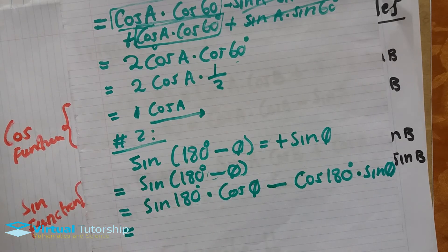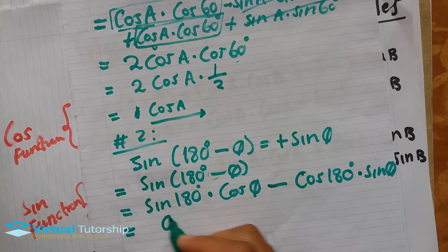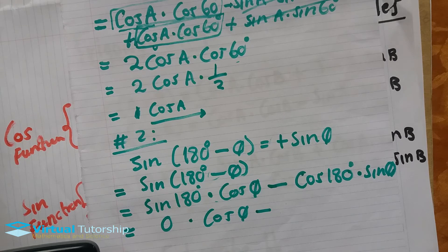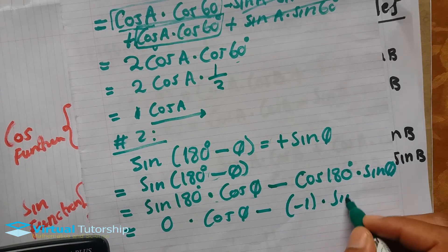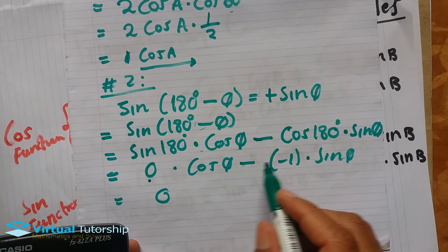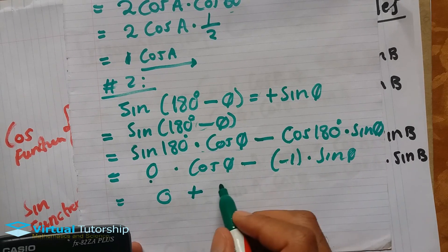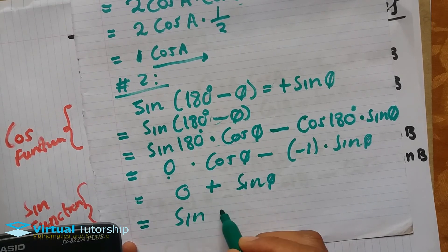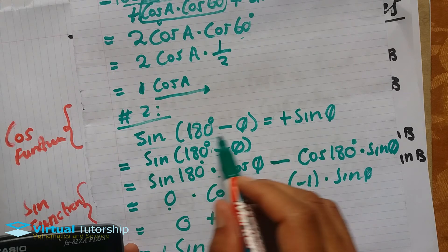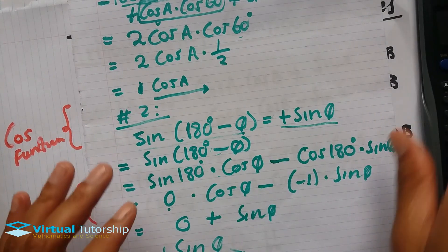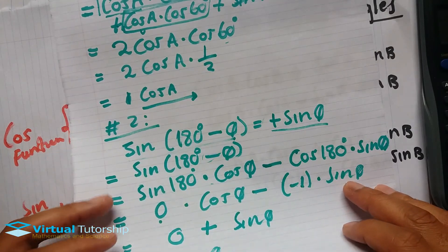sin(180°) equals zero, so the total equals zero. Any number multiplied by zero is zero. And the negative and a negative give a positive function, so one times sin(θ) equals positive sin(θ). So this reduction formula is actually true. Example two is proven.